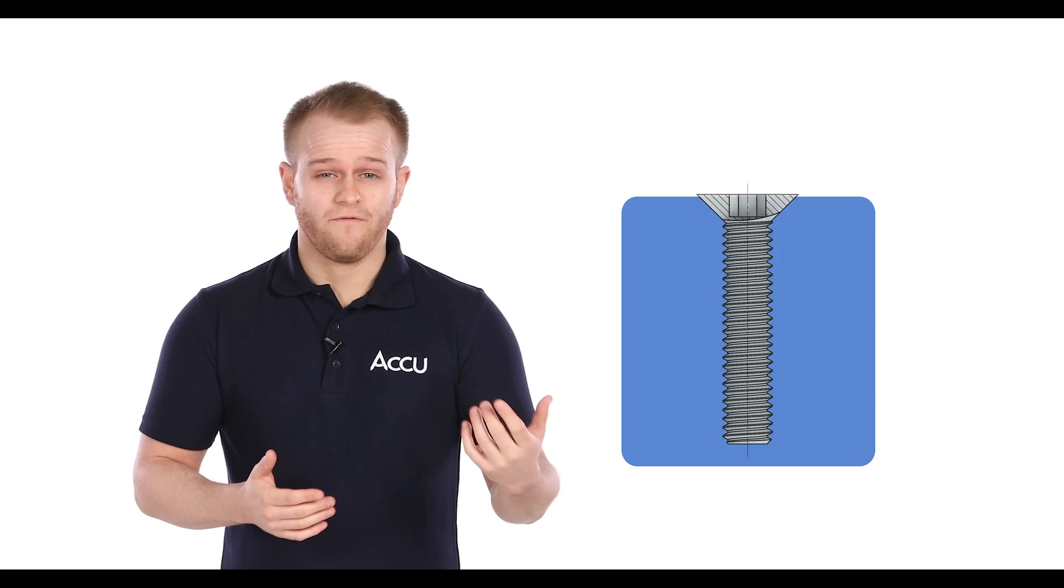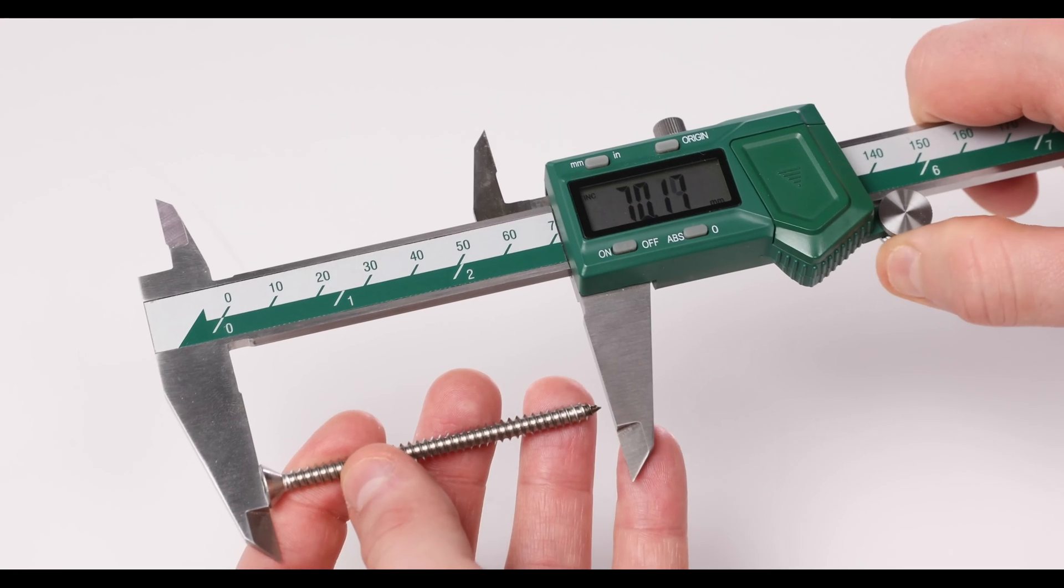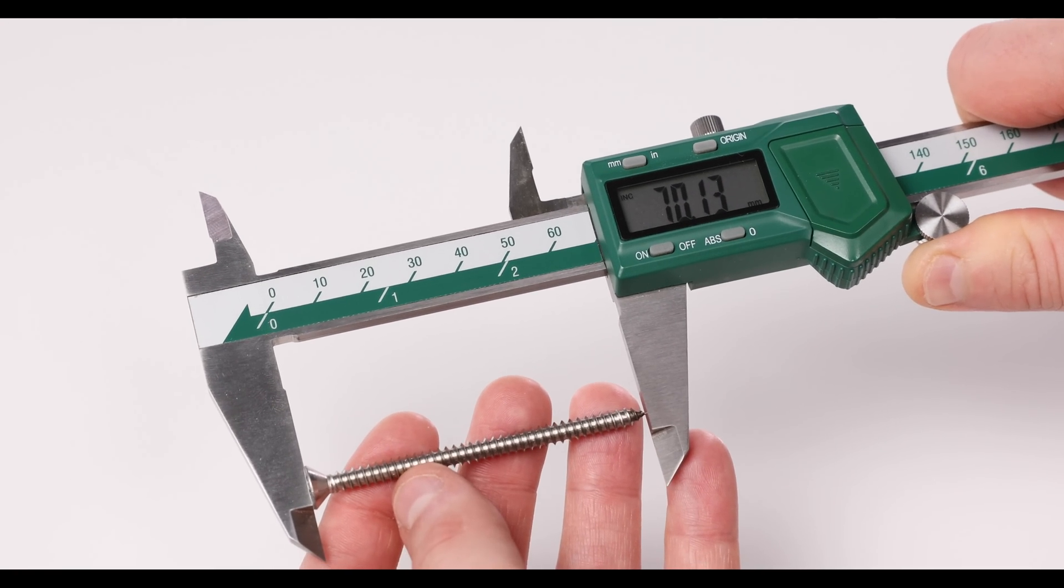For the countersunk or flat head screw though which is designed to sit flush with the surface we would measure from the top of the head to the tip of the screw.